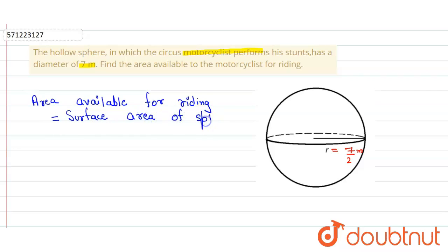Surface area of sphere, and that one is equals to 4 pi r squared. So that one is equals to 4 into 22 by 7 into 7 by 2 into 7 by 2. So this 7 will cancel out, and these two will also cancel out with this 4, and we get the answer is 154 meter square.